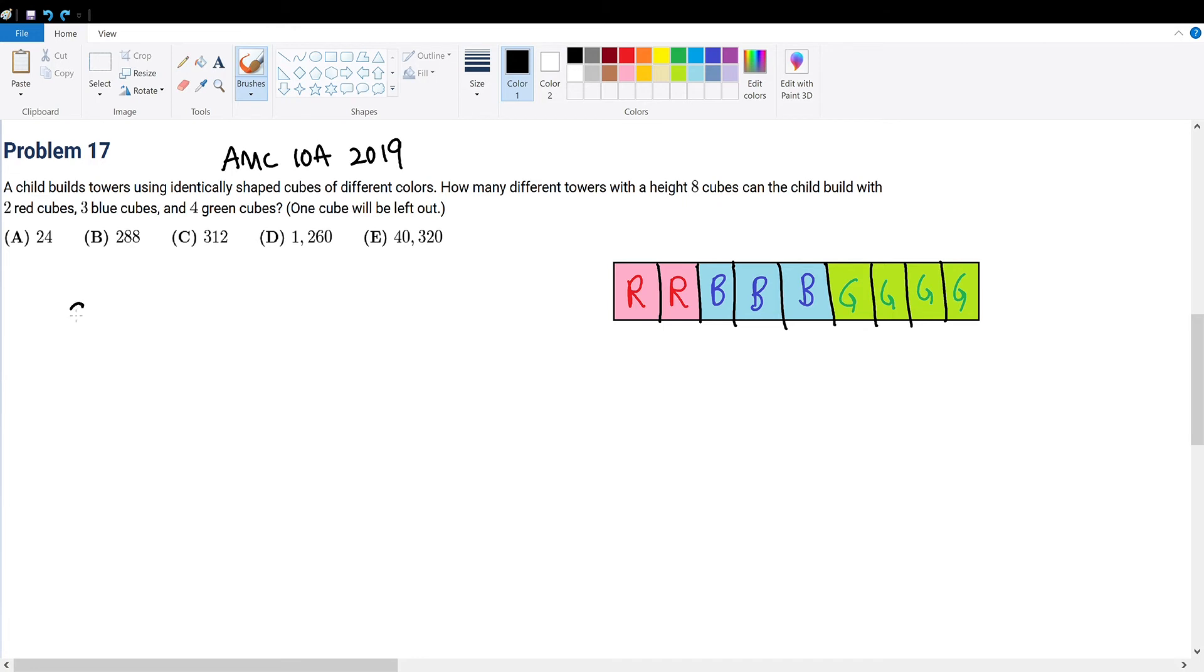We have 9 cubes and we only want to use 8 of them, so we must exclude one. But if we leave out one, what can this cube be? It can either be red, blue, or green, because he has 3 colors to work with.